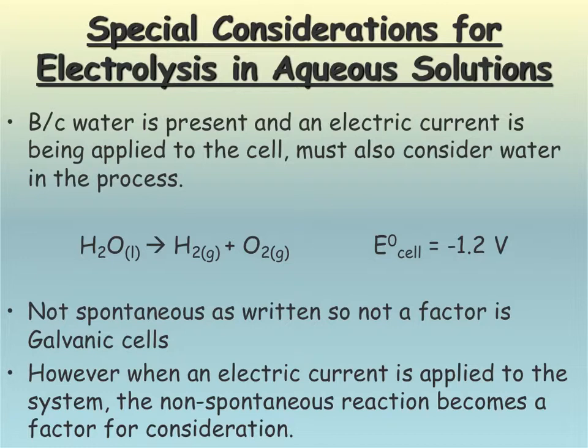You can also have an electrolytic cell where you have aqueous solutions or an electrolytic solution instead of a molten salt. Because water is going to be present in this aqueous solution, and an electric current is being applied to the cell, you also have to consider water in the process because water can also be reduced and oxidized.